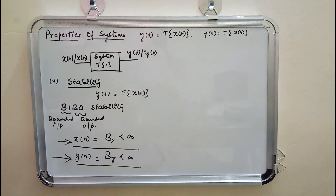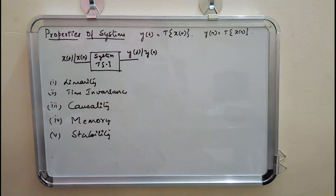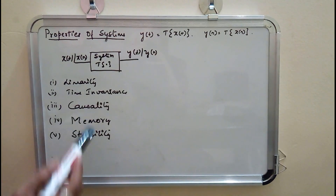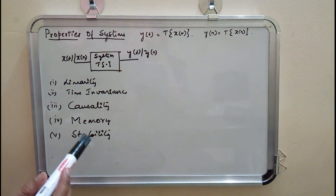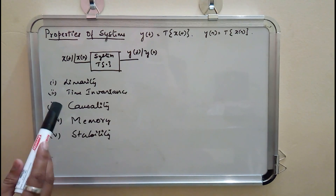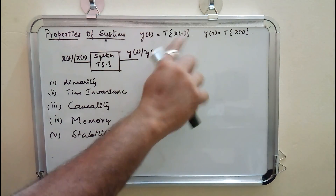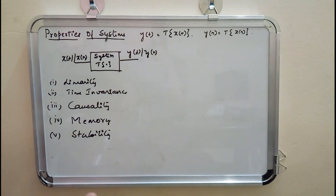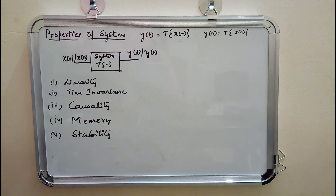We have studied these properties under the properties of systems. Problems related to these properties will be solved in upcoming videos. For different types of signals like even and odd, and operations on independent variables T and N, please refer to my previous videos. Thank you.